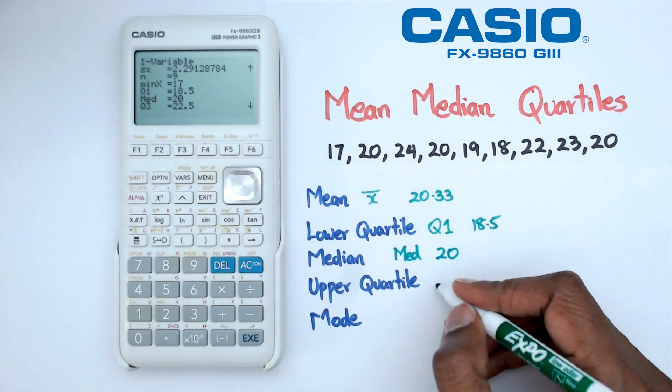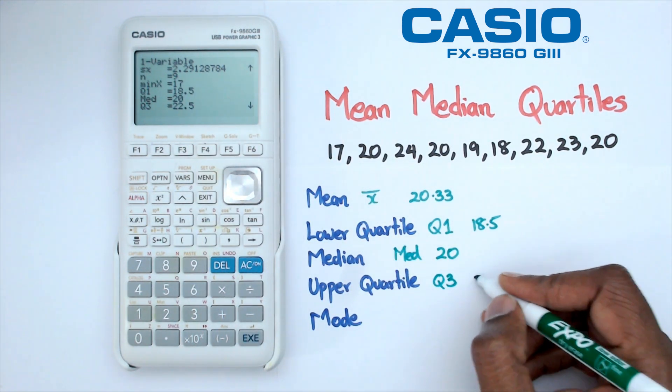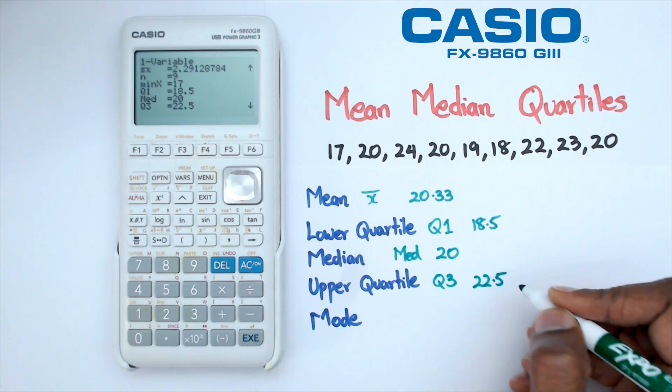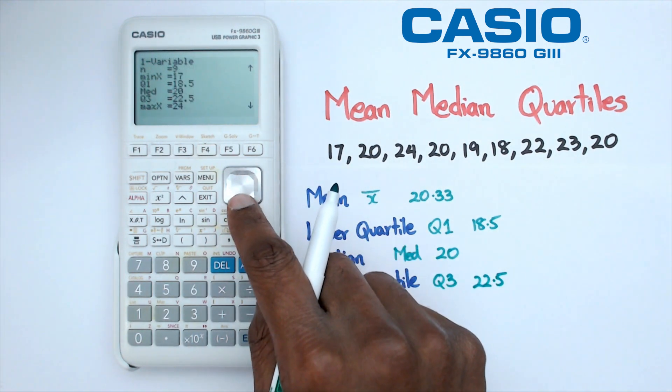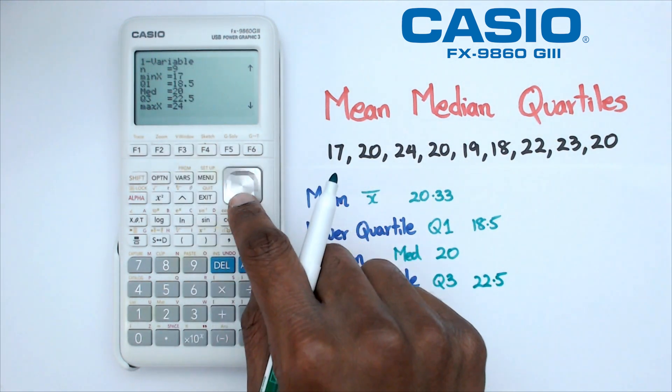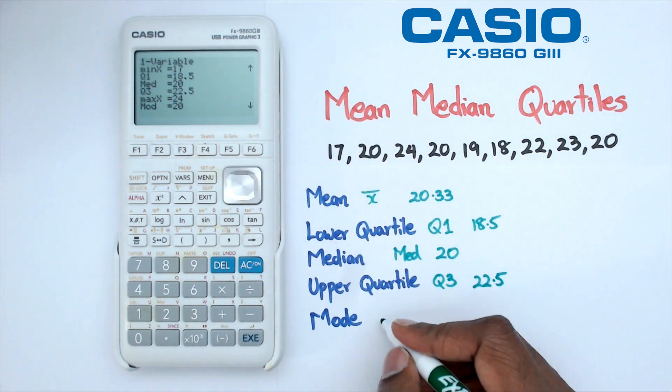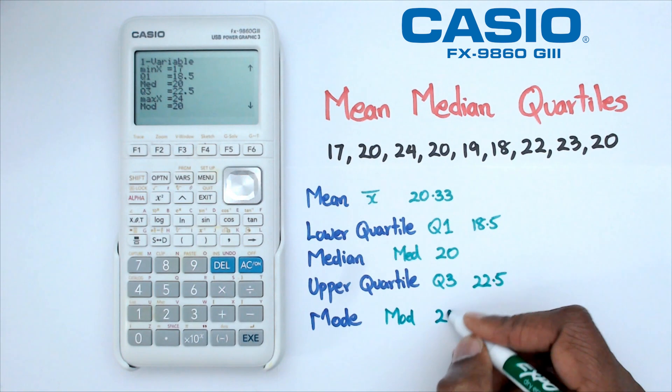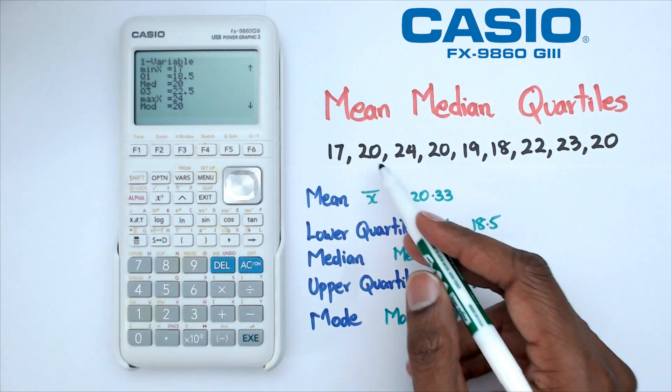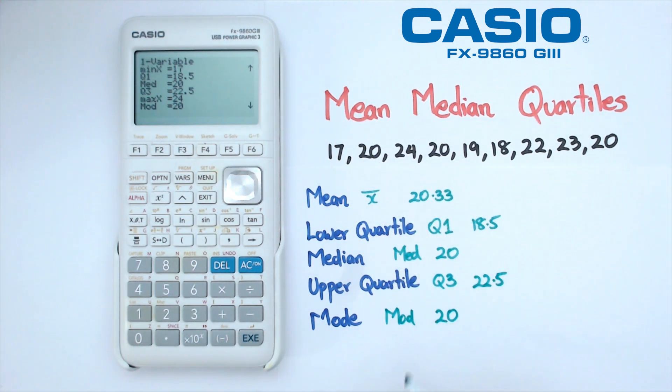Then we've got Q3, which is the upper quartile, and that is equal to 22.5. I've added one more thing there, we've also got the max, which is 24, and then finally the mode, which is abbreviated as mod. Mode is actually 20, and you can kind of see it, we've got one, two, three, 20 is actually repeating three times.